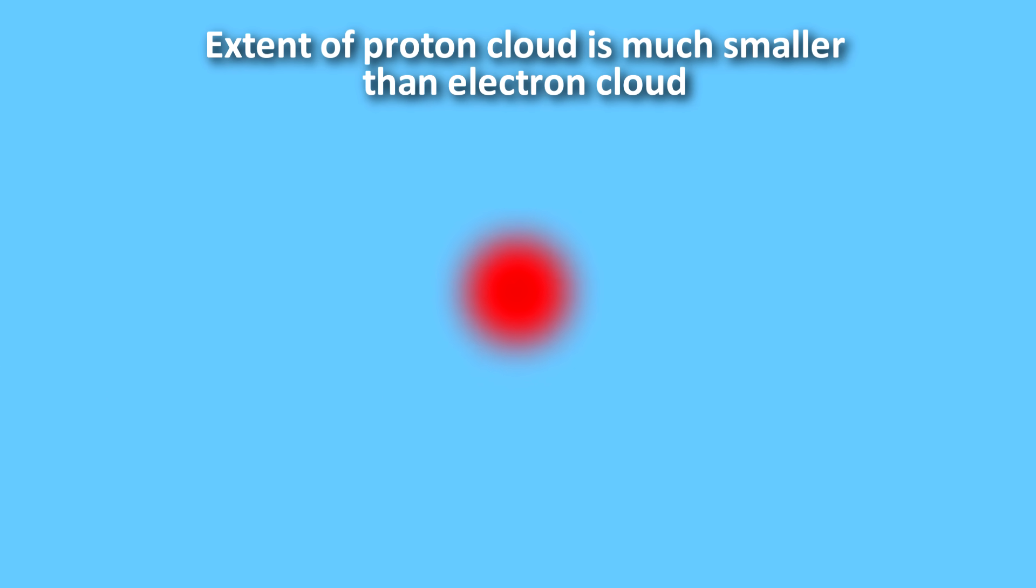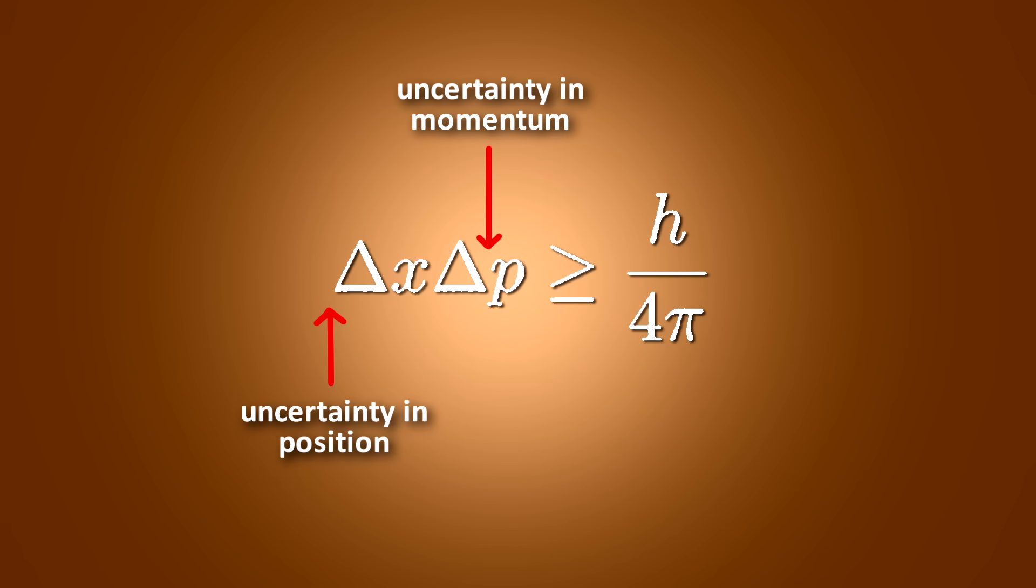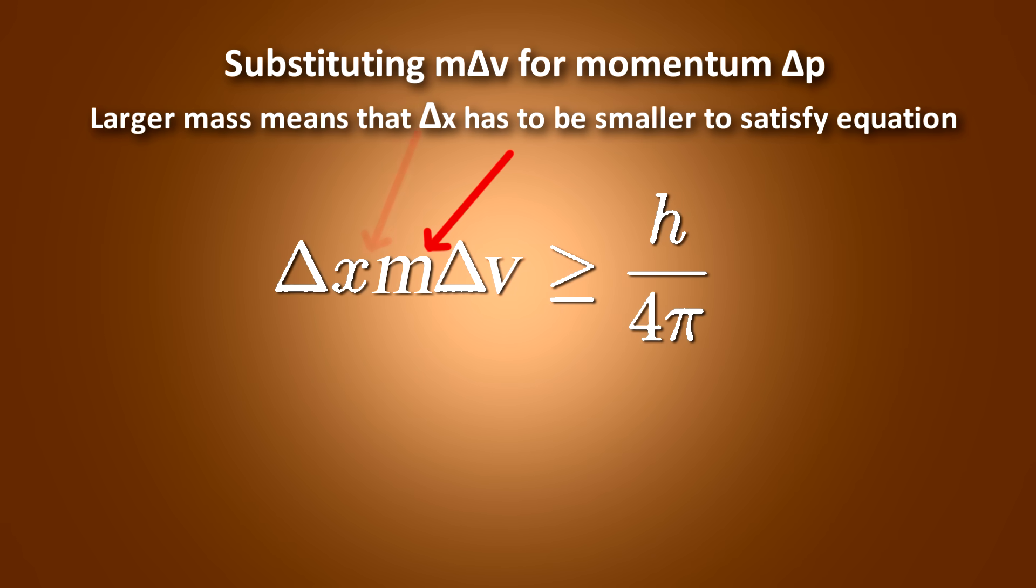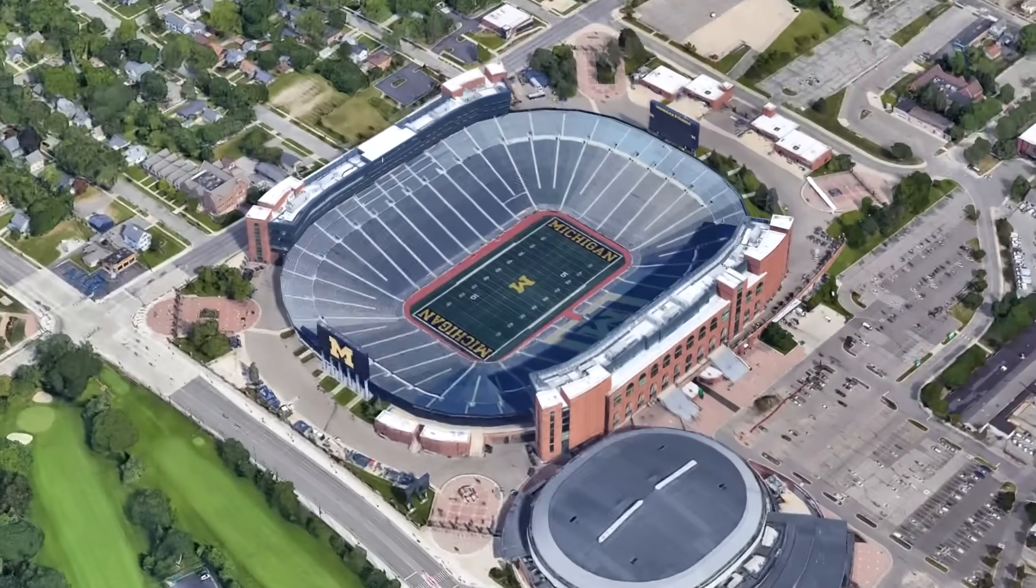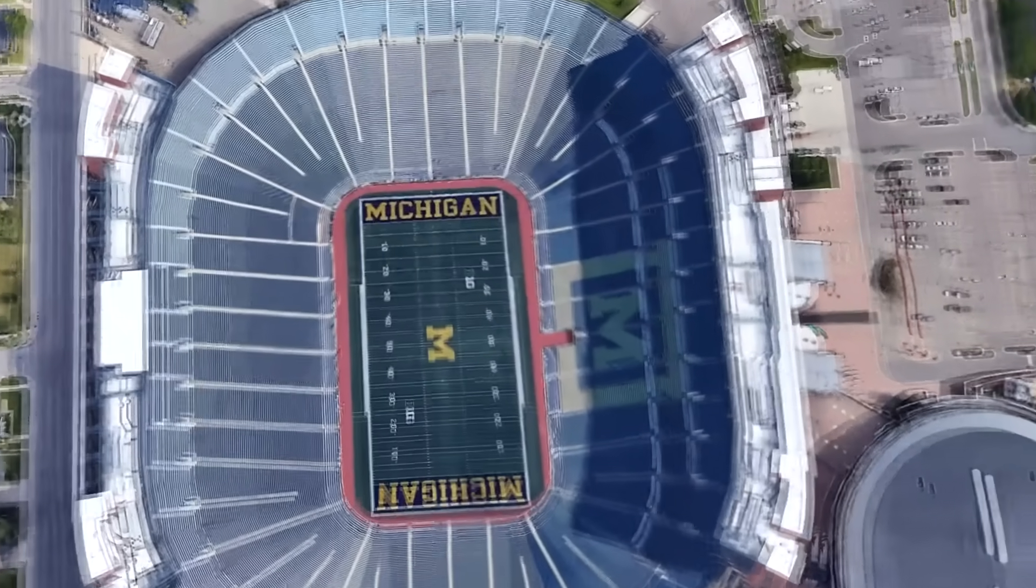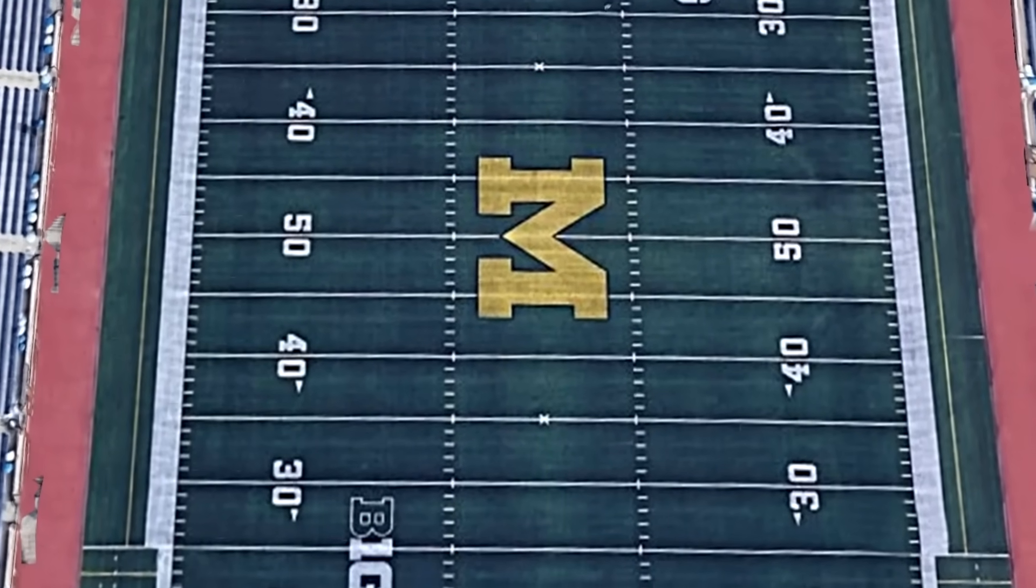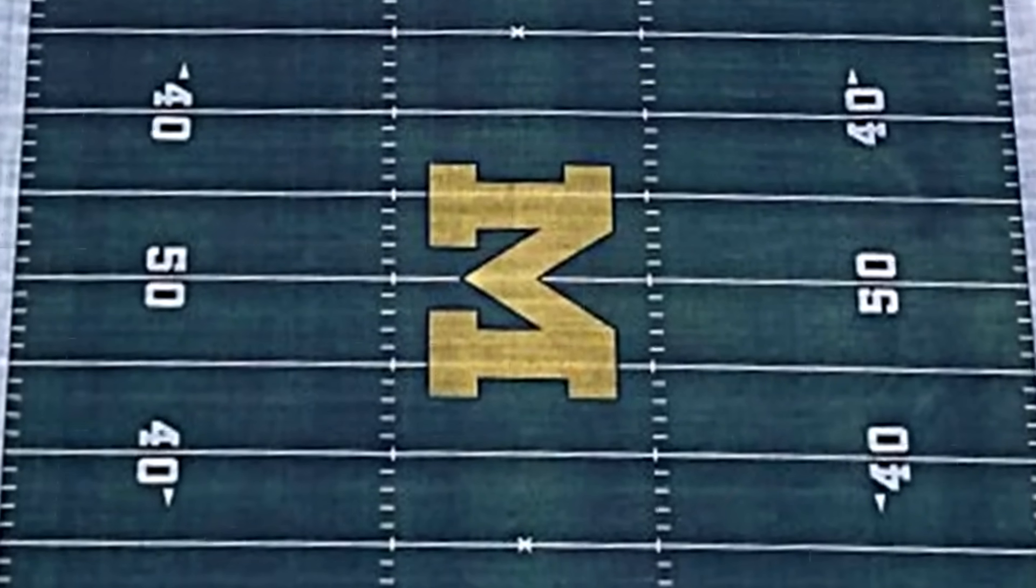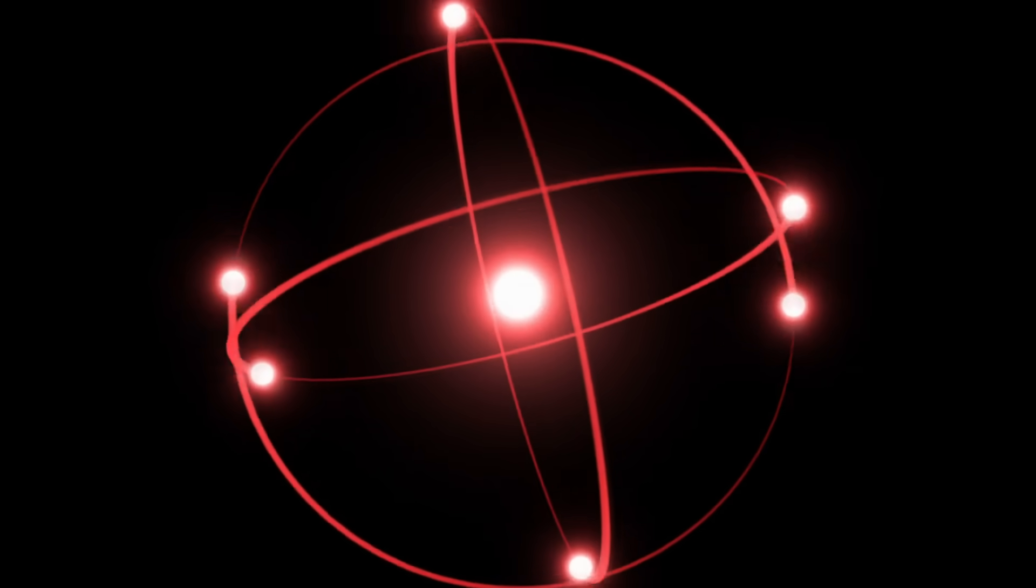And the same wave equation tells us that the nucleus of atoms, which in the case of the hydrogen atom is a proton, is also a cloud. But the extent of the proton cloud is much smaller than the electron cloud because it is much more massive. So if you look at the uncertainty equation, you can see that the extent of the delta x would be much smaller, given a large m, in order to satisfy the inequality. The proton cloud is so small in fact, that if the electron cloud was the size of Michigan Stadium, the largest sports stadium in America, which seats about 110,000 people, the proton would be the size of a marble at the 50 yard line. The electron cloud is about 100,000 times larger than the proton cloud.